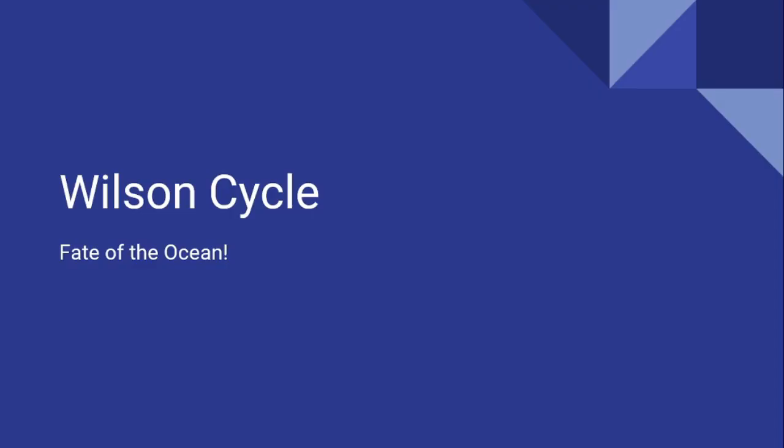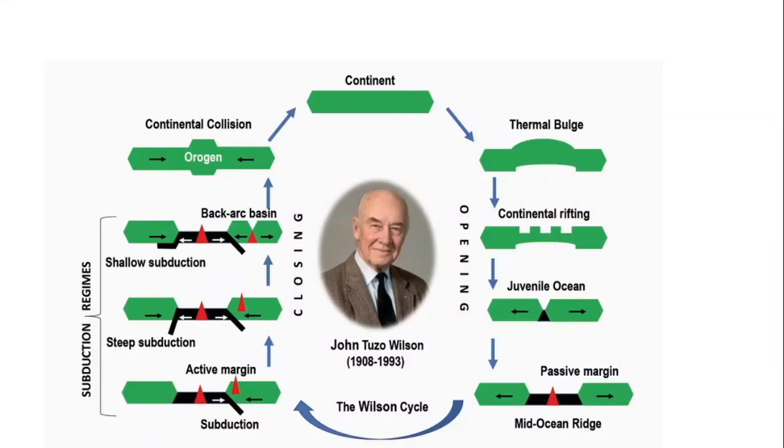Hello everyone, welcome to Geology Concepts. Today we cover a very simple yet important concept: the Wilson Cycle. The Wilson Cycle is the opening and closing of an ocean as a result of plate movements. Lithospheric plates move over hot molten magma present in the asthenosphere, giving rise to large structures that control the surface features of the Earth. The Wilson Cycle was given by John Tuzo Wilson, a famous Canadian geoscientist, who described how continents and oceans shape themselves.